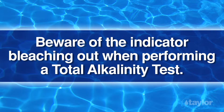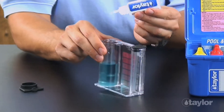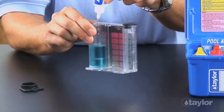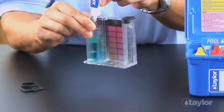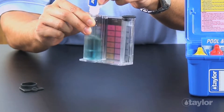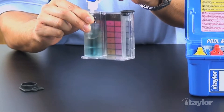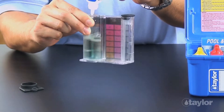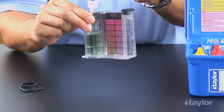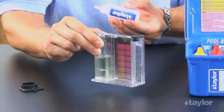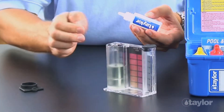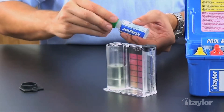Beware of the indicator bleaching out when performing a total alkalinity test. The most common interference is caused by a high level of chlorine or bromine. If excessive chlorine or bromine is present in the sample, one of the two organic dyes used in the total alkalinity indicator bleaches out. When this happens, the reaction's color changes from blue to yellow instead of green to red.